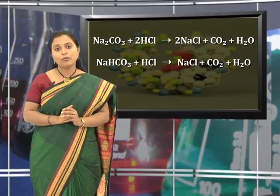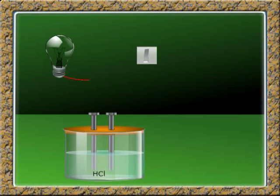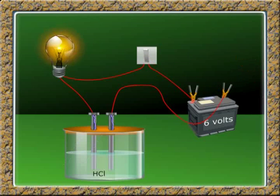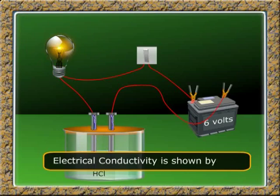Take some amount of dilute HCl in a beaker. Insert a rubber cork fixed with two nails at the top. A bulb and a switch are connected with wires; one end is connected to a 6V battery and to one nail, the other end to another nail. Now switch on the circuit. Due to the presence of hydrochloric acid, the bulb glows, showing that electrical conductivity is also shown by acids.